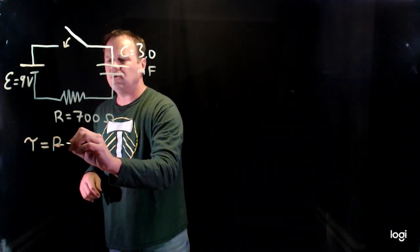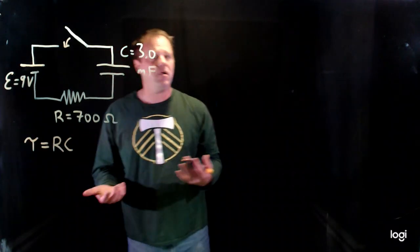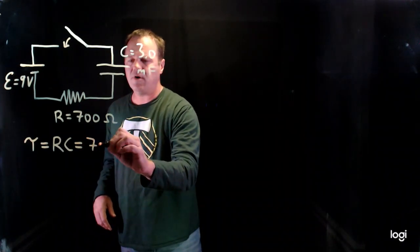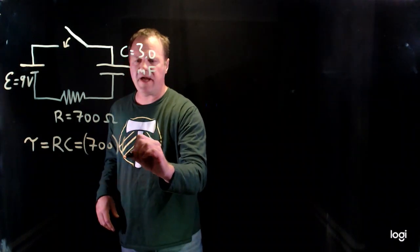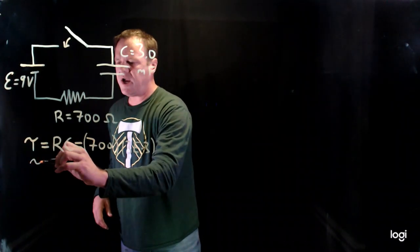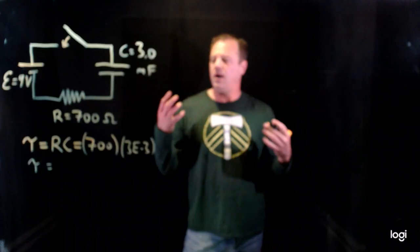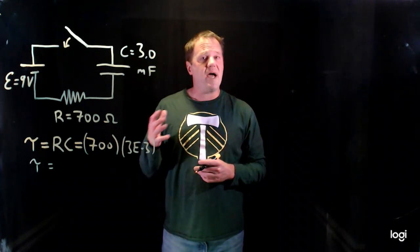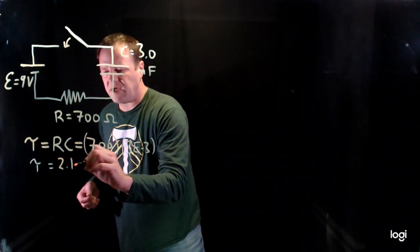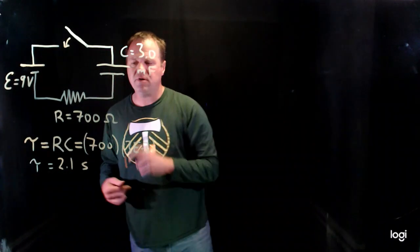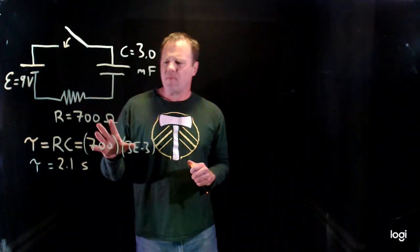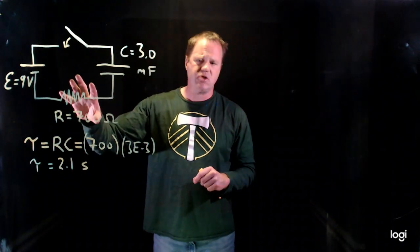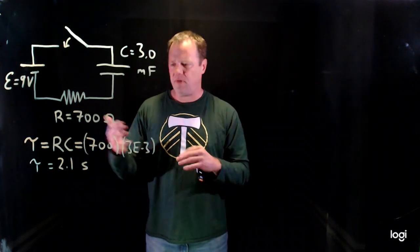The time constant is simply equal to the resistance times the capacitance. Let's go ahead and calculate that first because we're going to use it in subsequent calculations. We take 700 ohms and multiply by 3 × 10⁻³, and we find that the time constant is 2.1 ohm-farads. An ohm-farad is actually a second, so it's 2.1 seconds. Roughly, that tells us how much time it takes to lose about two-thirds of the current in the circuit.